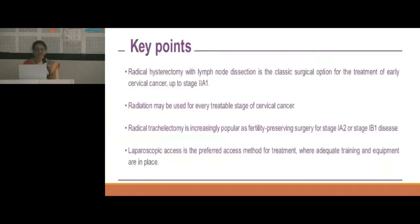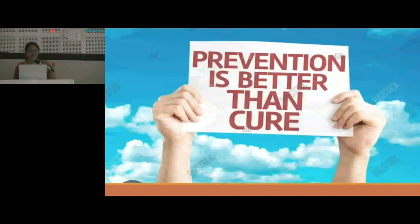Key points: radical hysterectomy with lymph node dissection is the classical surgical option for early cervical cancer up to stage 2A1. Radiation may be used for every treatable stage of cervical cancer. Radical trachelectomy is increasingly popular as fertility-preserving surgery for stage 1A2 and 1B1 disease. Laparoscopic access is preferred where adequate training and equipment are in place. The take-home message is: prevention is better than cure.